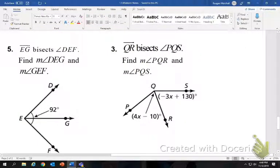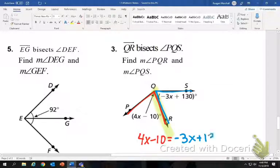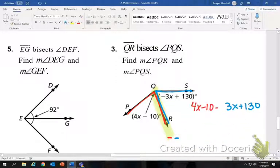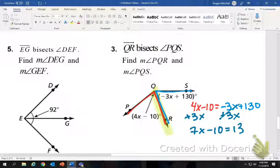And then the last, QR bisects again. So we have a bisector, which means angle PQR and angle SQR. They're going to be congruent, so same measure. So if they're the same measure, we're going to set them equal. So 4X minus 10 will equal negative 3X plus 130. So you're always going to move the smaller X, which here would be the negative. So we're going to add this 3X, so we'll have 7X minus 10 equals 130. We're still going to add 10. Then we have 7X equals 140, divide by 7 and X equals 20.